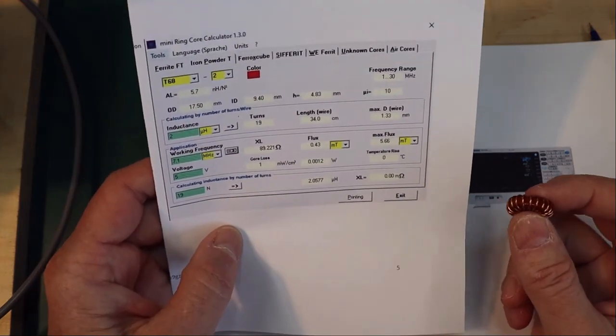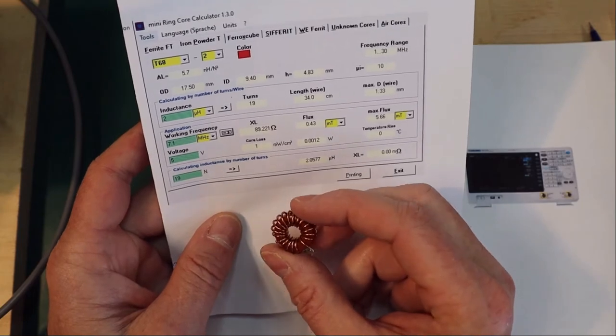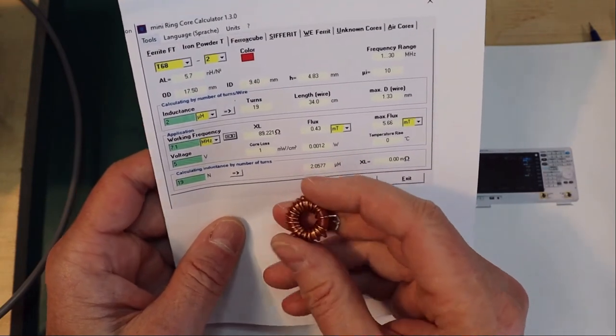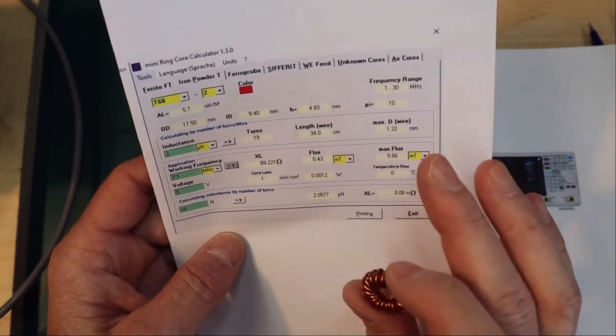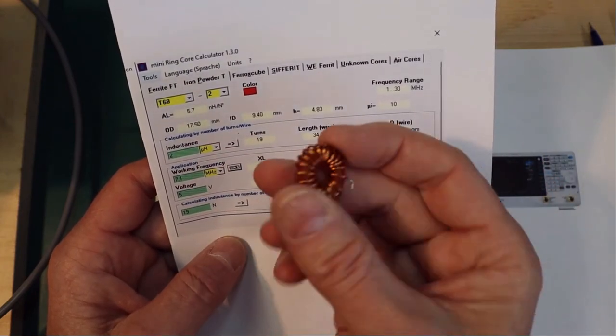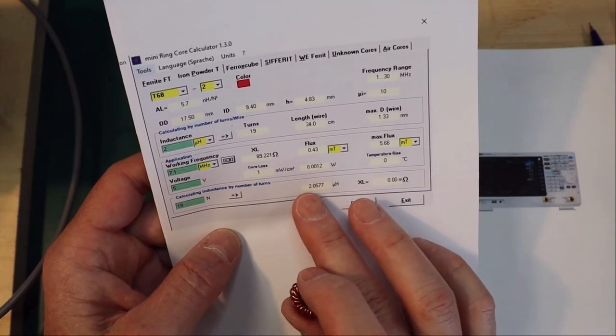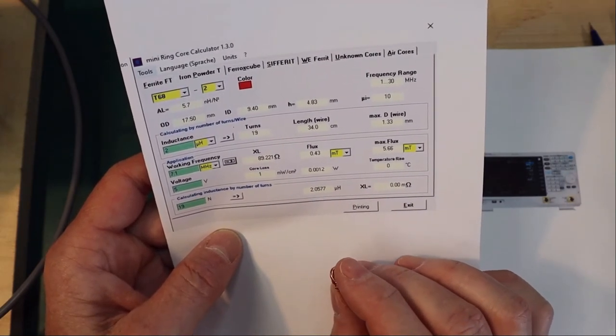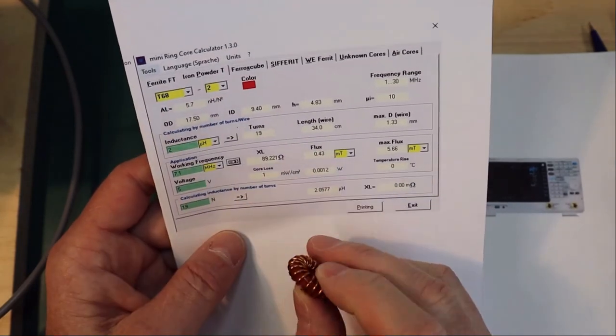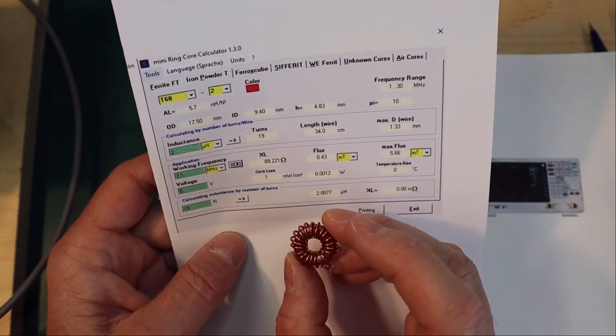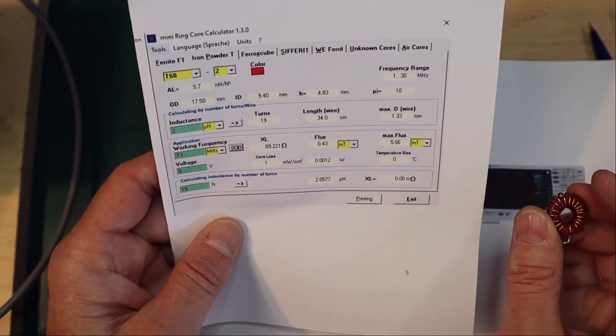So we are getting ready to build this bandpass filter. First of all, we have to wind all these inductors. This one is a 2 microhenry inductor. It is based on a core T68-2. This is a core good for 1 to 30 MHz. We did choose 19 turns. These are 19 turns of I think 0.57 mm wire. And that should give you about 2.0577 microhenrys. We first gonna test this on 10 kHz. This AL is typically measured at 10 kHz. And then we are going to measure it at 7 MHz. And at 7 MHz we expect about 90 ohm reactance.